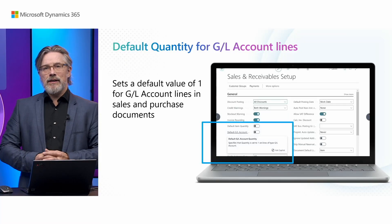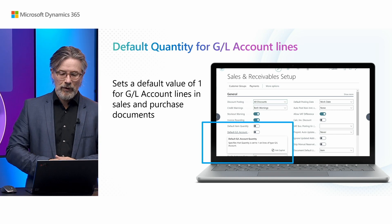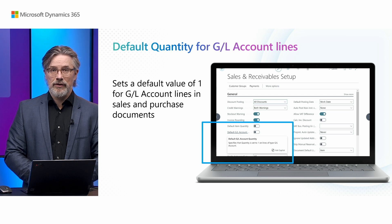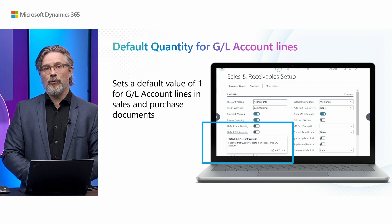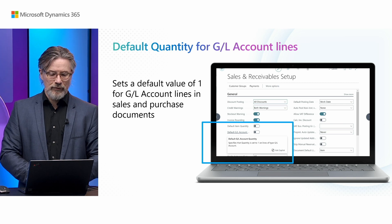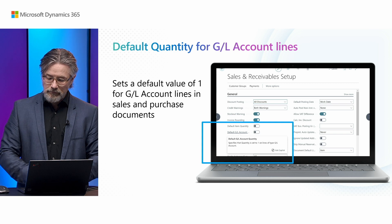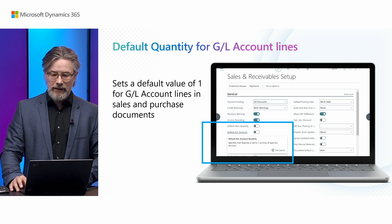And sometime soon, maybe the next release, we will also do automated billing so you can set it up once and let it run. We have a very small new feature that will help you if you're running a lot of scenarios where you're adding GL lines to your sales and purchase documents. You set it up in the sales and receivables or purchase and payables setup. It's a small toggle that says default quantity for GL lines. It will be set to one if you toggle it on and you don't have to type it in manually, just like we did for the item default quantity.